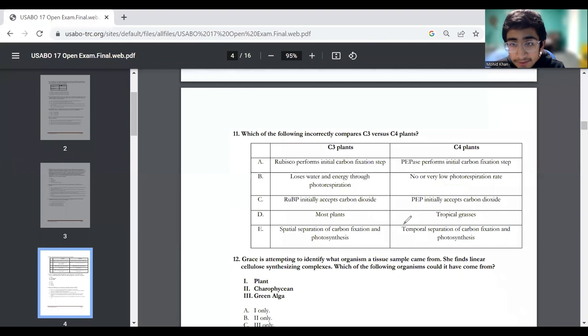The way I caught that was this word, temporal separation. Temporal means time. And the temporal separation does not occur with C4 plants, that occurs with CAM plants. I'm 100% sure that this thing about C4 plants is incorrect. So that's why the answer would be E, because of that temporal separation. But this is a good graph to analyze so that you can know the differences between C3 and C4 plants.